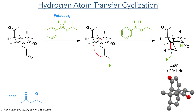This enone then took part in a hydrogen atom transfer cyclisation. The compound was reacted with iron(III) acetylacetonate and isopropoxyphenylsilane to promote a radical hydrogen atom transfer to the terminal alkene, producing a secondary radical that then added to the enone. This was further reduced by another equivalent of silane, completing the formation of the six-membered ring in a 44% yield with a 20-to-1 dr. The mechanism of this reaction has been elucidated to a very fine level of detail, and I highly recommend reading the paper linked below.